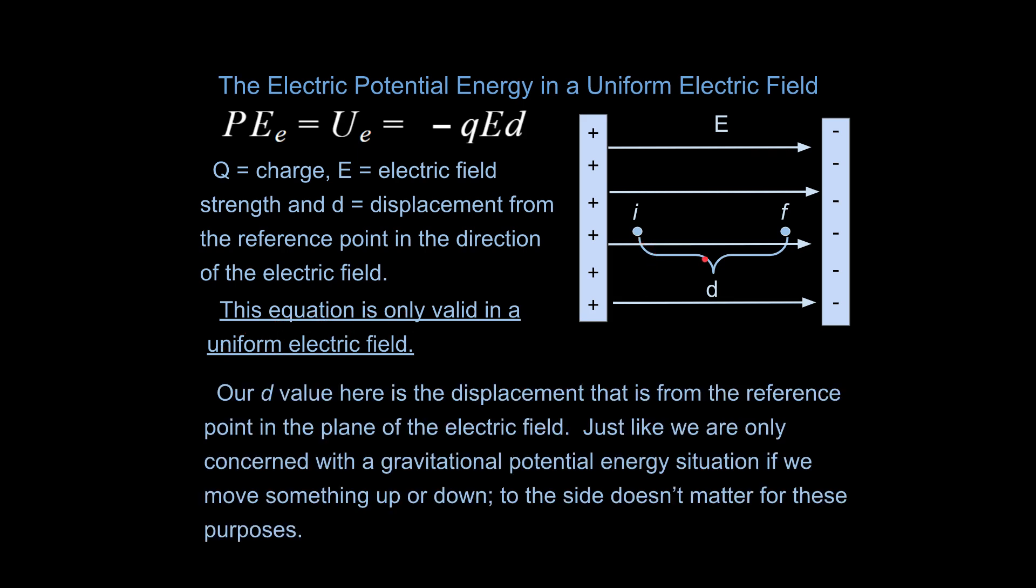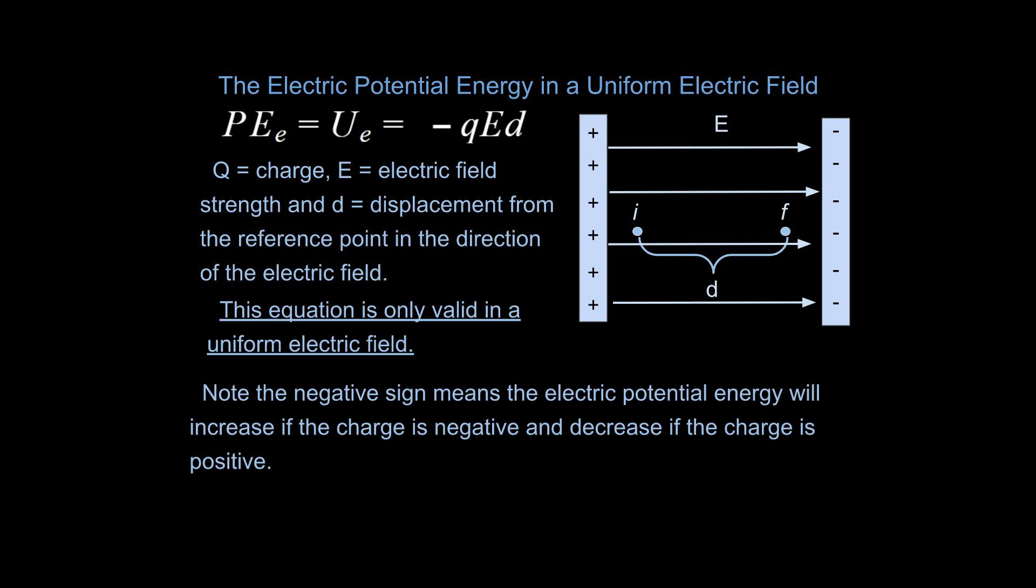One thing I will say about this d value is that we're interested in this d value in this plane right here. If there's some component that moves in this plane right here, we're really not interested in that motion, we're just interested in like this. And one thing I do want to point out, this negative sign also means that the potential energy will increase if the charge is negative and decrease if the charge is positive. We're assuming this d value is in the same direction as the electric field lines right here.